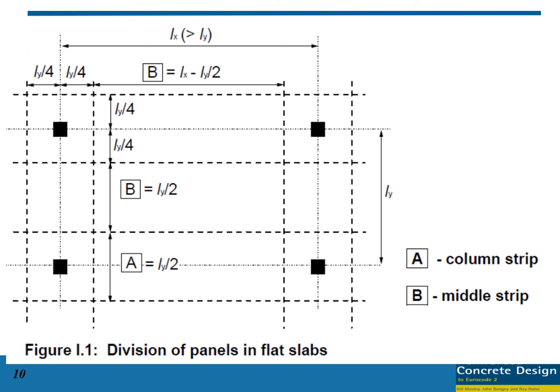In the example shown, we have four rectangular columns marked in black, with column strips and a middle strip. Note that in Eurocode 2, lx refers to the short span, not the long span. The width of the column strip depends on the short span. In this particular slab, ly is used — all outer zones are column strips and the central zone is the middle strip.